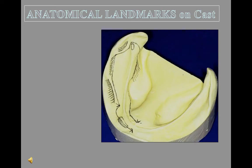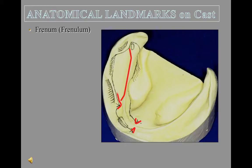I will point out some important anatomic landmarks on the cast. The three triangular areas represent the labial frenum, the lingual frenum, and the buccal frenum — of which there are two, one on each side of the arch. The area being inscribed in red is called the buccal shelf. It is bounded by the external oblique line on the cast and the crest of the alveolar ridge.